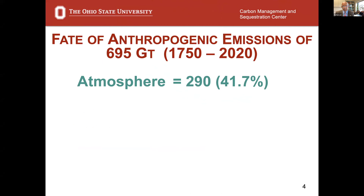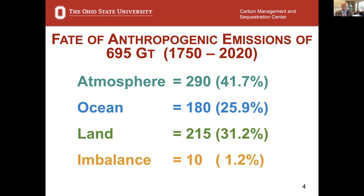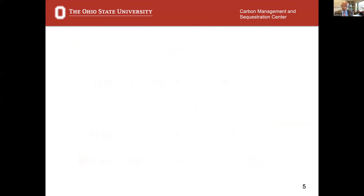Looking at 1750 to 2020 emissions, 41.7% was retained in the atmosphere, ocean uptake about 26%, and land-based sink about 31%. That gives an impression that land-based sinks play a considerable role in absorbing anthropogenic emissions, and that perhaps with some policy interventions — climate smart agriculture — we can make agriculture a solution to climate change. So there should be focus on land-based sinks, which means soil plus vegetation.